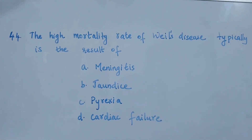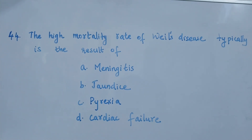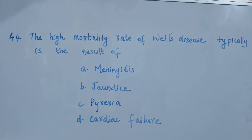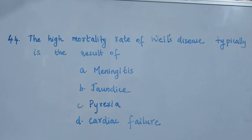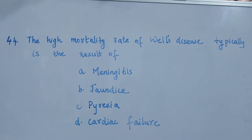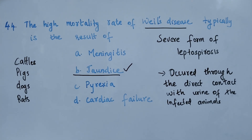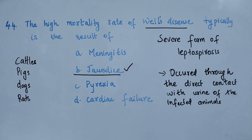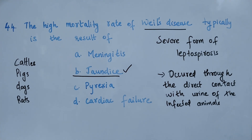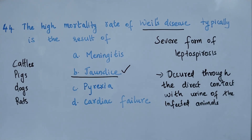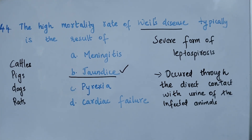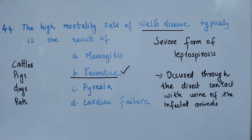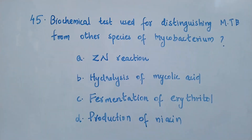Question number 44. The high mortality rate of Weil's disease typically is the result of: option A, meningitis; option B, jaundice; option C, pyrexia; option D, cardiac failure. The right answer is option B, jaundice. Weil's disease is a severe form of leptospirosis, which occurs through direct contact with urine of infected animals such as cattle, pigs, dogs, and rats. The organs mostly affected are the kidney and liver, so the right answer is jaundice.